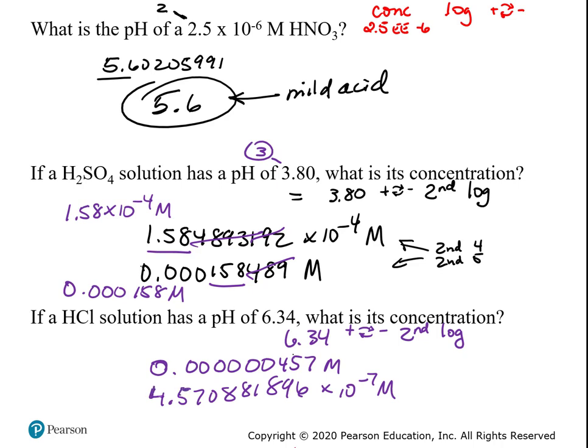Both of those are exactly the same — one's in scientific notation, the other in normal expanded form, and you can flip back and forth. Three significant figures, because 6.34 has three significant figures. So 457 are the three significant figures to keep. The next number is 0, so those round off. This would be 4.57 times 10 to the minus 7th molar. Remember to keep the exponent number — those two little numbers at the far end of the calculator tell you what your exponent is.